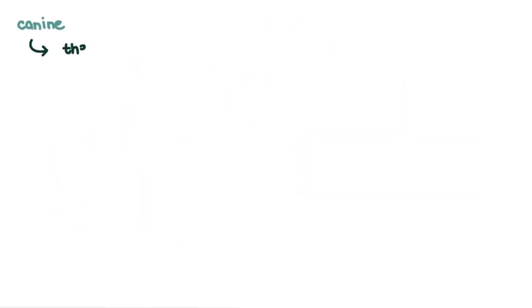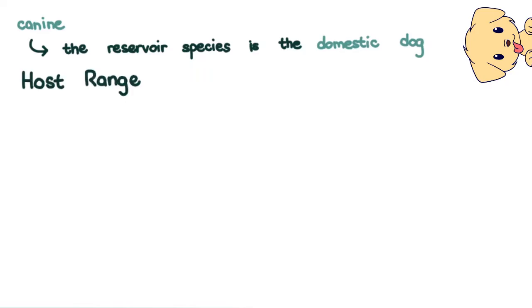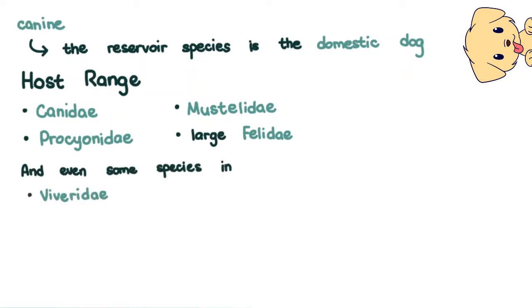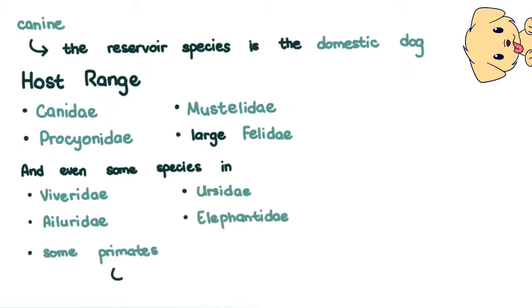It is called canine because the reservoir species is the domestic dog, but its host range is wide and includes not only members of the family Canidae, but also Procyonidae, Mustelidae, and Large Felidae. And even some species in Viveridae, Hyaluridae, Ursidae, and Elephantidae, and some primates, specifically the rhesus monkey.